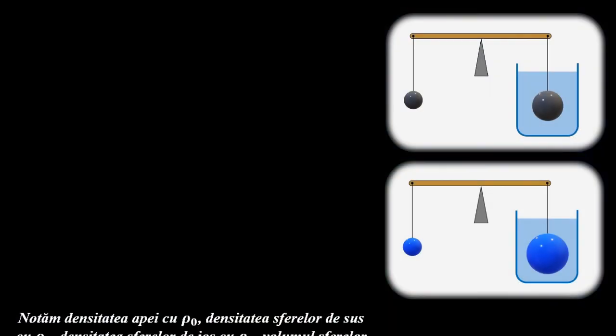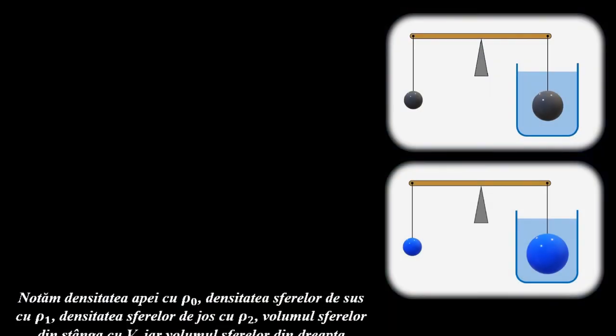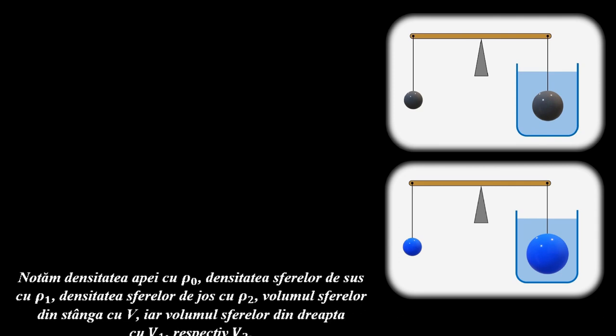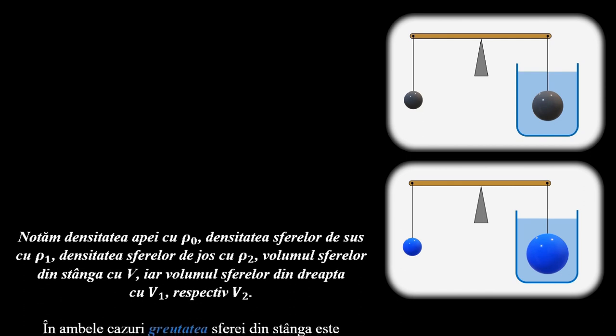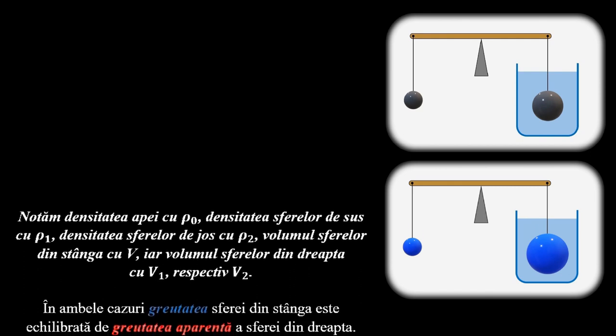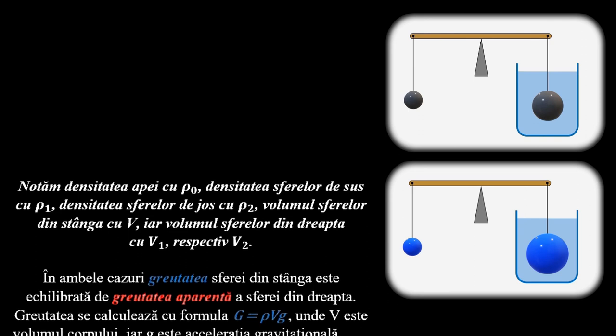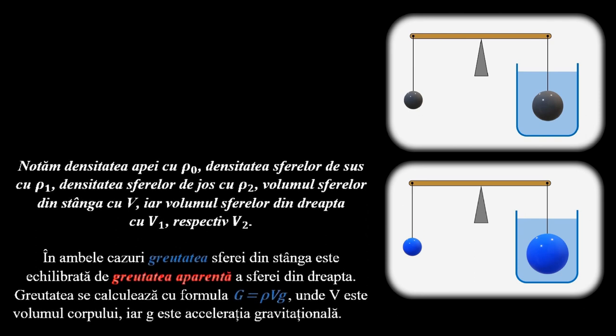Notăm densitatea apei cu ρ0, densitatea sferelor de sus cu ρ1, densitatea sferelor de jos cu ρ2, volumul sferelor din stânga cu V, iar volumul sferelor din dreapta cu V1, respectiv V2.